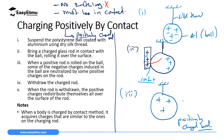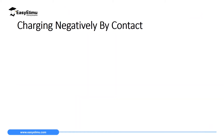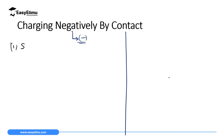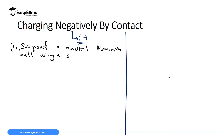Now we will look at how we can charge a body negatively by contact method. Remember what we said - if we want to charge a body positively by contact we use a positively charged rod, so if we want to charge it negatively, we will use a negatively charged rod. Therefore, if you are told to describe how you can charge a body negatively by contact method, the first step is to suspend a neutral aluminium ball using a silk thread.